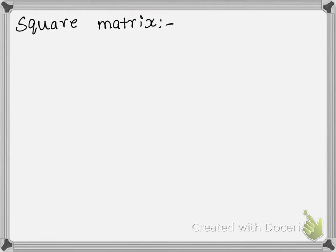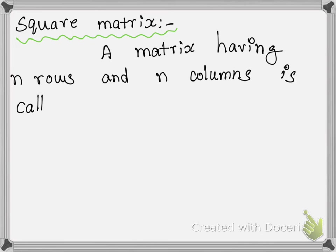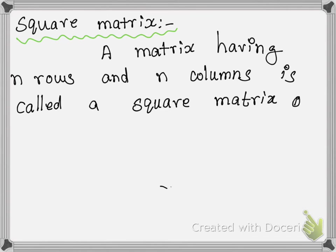Next definition: square matrix. A matrix having n rows and n columns is called a square matrix of order n.